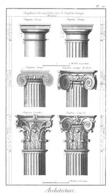Caryatid: a sculpted female figure serving as an architectural support, taking the place of a column or a pillar supporting an entablature on her head. Casement window: window hung vertically, hinged one side, so that it swings inward or outward.